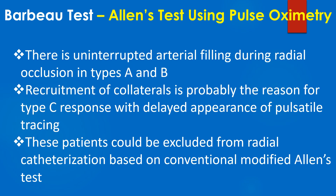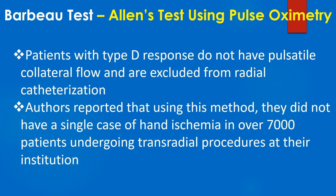There is uninterrupted arterial filling during radial occlusion in Types A and B. Recruitment of collaterals is possibly the reason for the Type C response, with delayed appearance of pulsatile tracing. These patients could be excluded from radial artery catheterization based on the conventional modified Allen's test. Patients with a Type D response do not have pulsatile collateral flow and are excluded from radial catheterization.